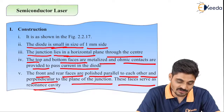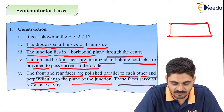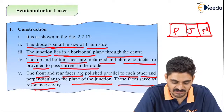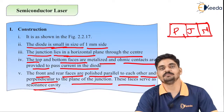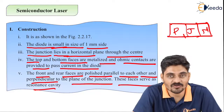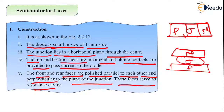Generally in semiconductor physics, the P region and N region are shown with the junction in a vertical plane. But in semiconductor laser, the junction is in a horizontal plane — so N or P is on one side, N or P on the other, and the junction is in between them horizontally.